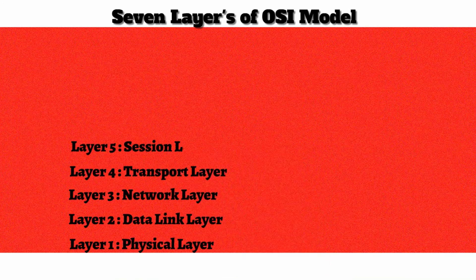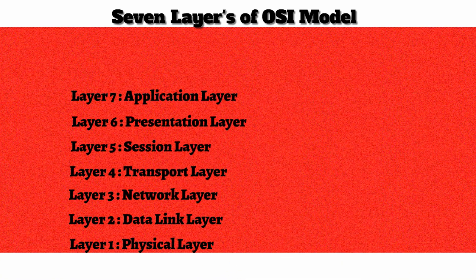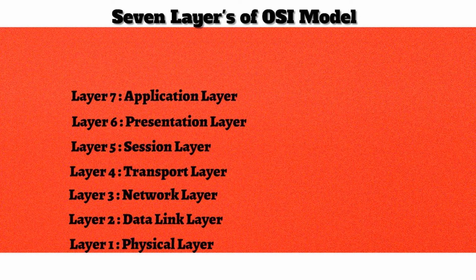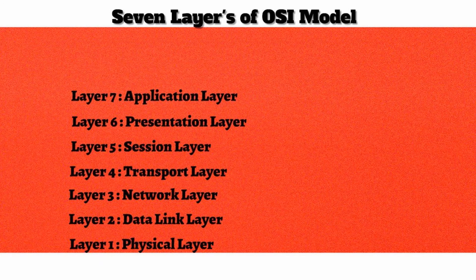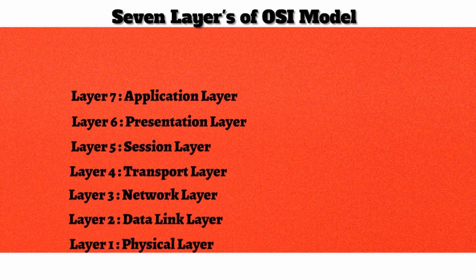The upper three layers are layer 5 the session layer, layer 6 the presentation layer, and layer 7 the application layer. You might have difficulty finding something that lives at layer 5 in a real network, and that is okay. Not everything fits neatly into a specific layer — a protocol or piece of hardware might live at more than one layer. In general, layer 5 the session layer is responsible for setting up, maintaining, and tearing down sessions. A good example is SIP, the Session Initiation Protocol, used in voice over IP networks to set up, maintain, and tear down phone calls.